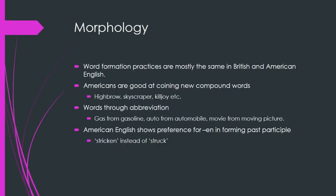The next section is morphology. Word formation practices are mostly the same in British and American English, but Americans are very good at coining new compound words — words like highbrow, skyscraper, and killjoy. They are also very good at abbreviating: gas from gasoline, auto from automobile, movie from moving picture. In American English, there is also a preference for -en in forming the past participle; for example, they use 'stricken' instead of 'struck.' That is peculiar to American English.